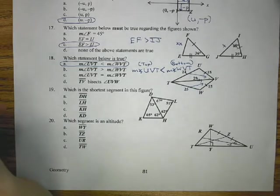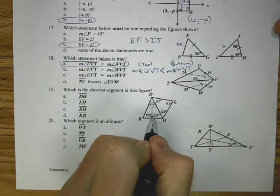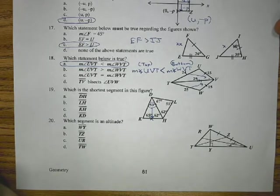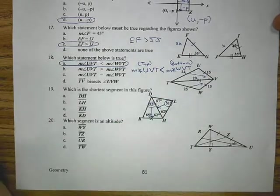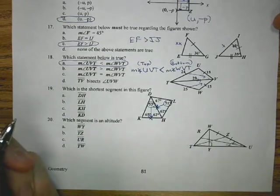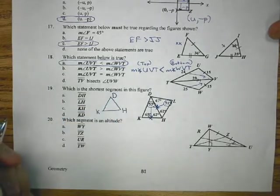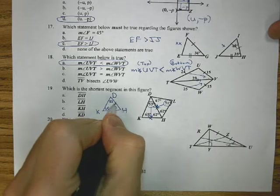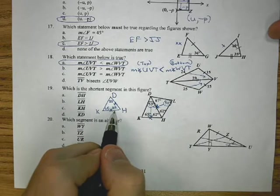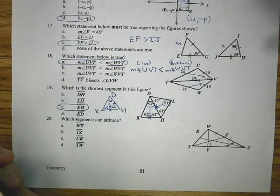For number 19, we need to find the shortest segment in the figure. To do that, we're going to find the shortest segment in each triangle first. If I look at the triangle DHK, 53 is the smallest angle, so KH is the smallest side. In triangle DLH, 51 is the smallest angle, so the side opposite that is DH. If I redraw that triangle DKH, I have 53, 62, and 65. The shortest one in just that triangle is KH because it's opposite to 52, so C is my answer.